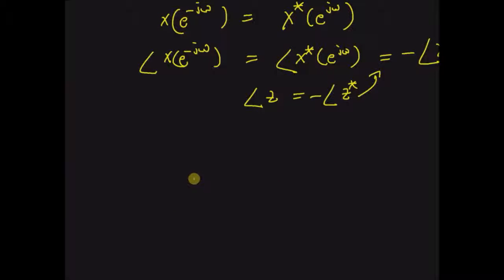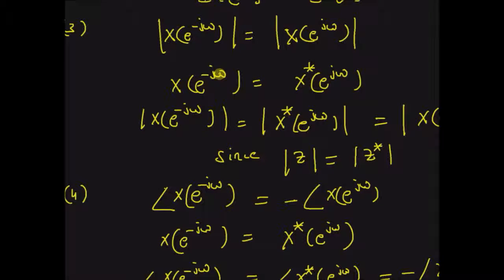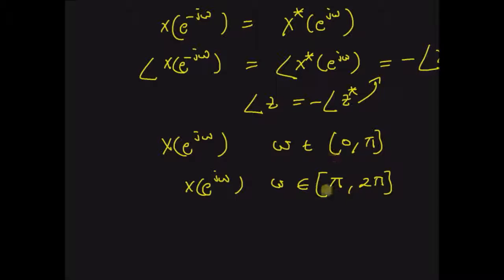Because of this symmetry property, the DTFT has the following advantage: if you know the DTFT X(e^{jω}) for omega belonging to the interval [0, π], you also know the DTFT from π to 2π. Because the magnitude of X(e^{-jω}) is equal to the magnitude of X(e^{jω}), the magnitude from 0 to π is exactly the same as the magnitude from π to 2π. Similarly, the phase from one interval is exactly the negative of the phase from the other interval.